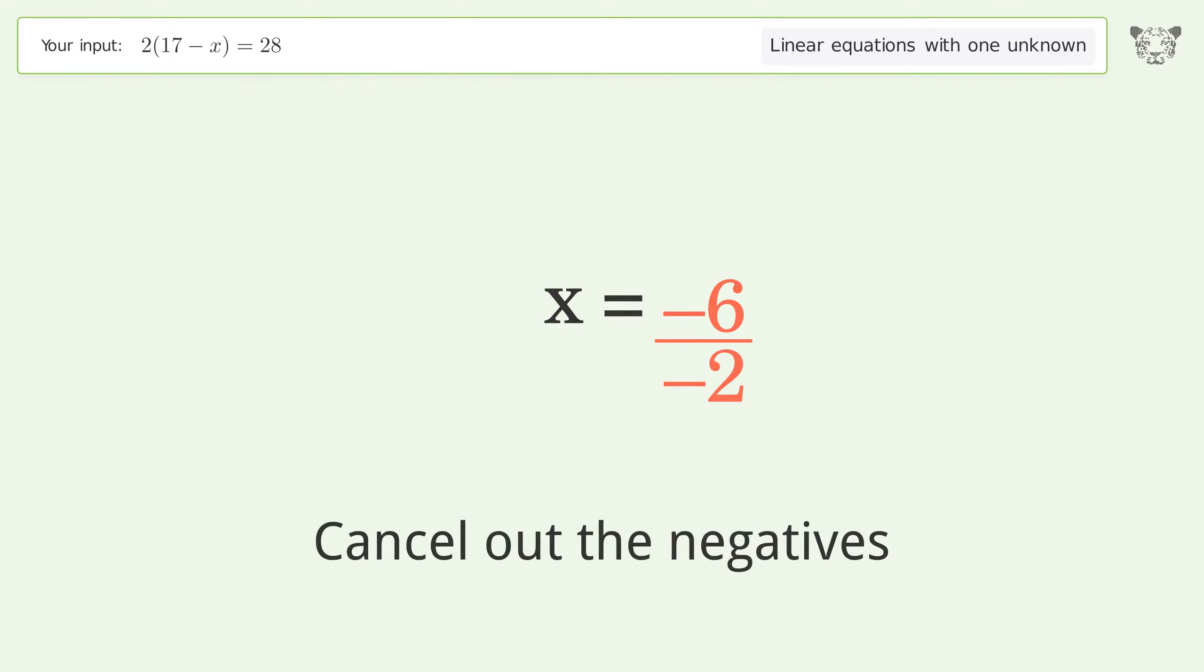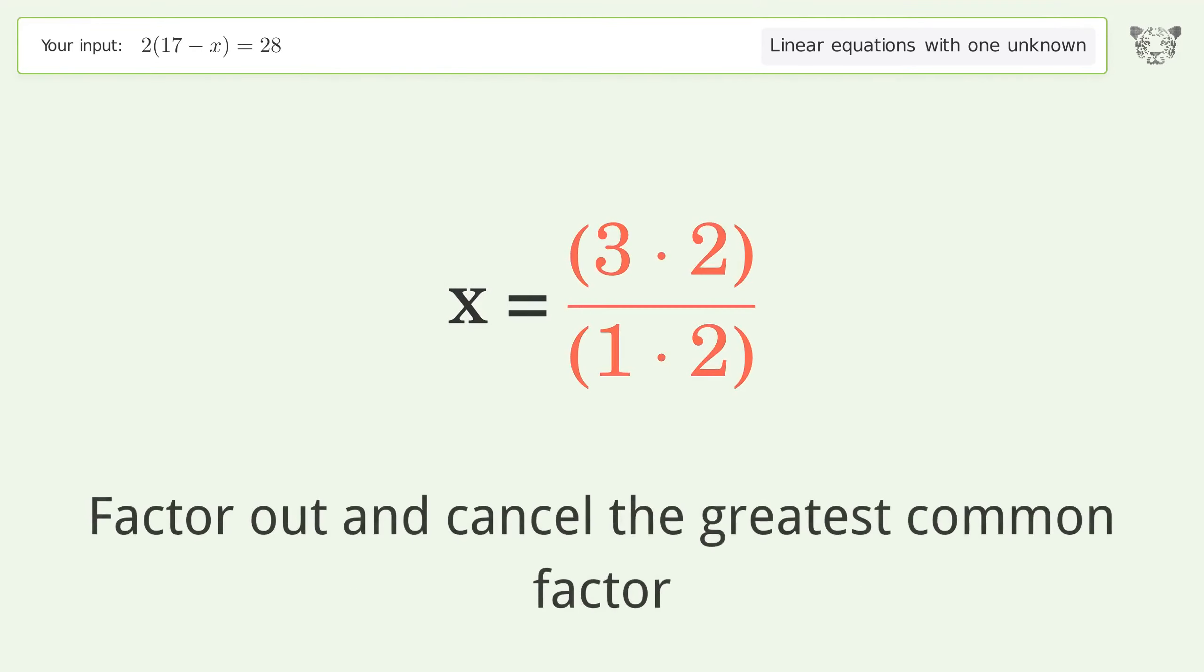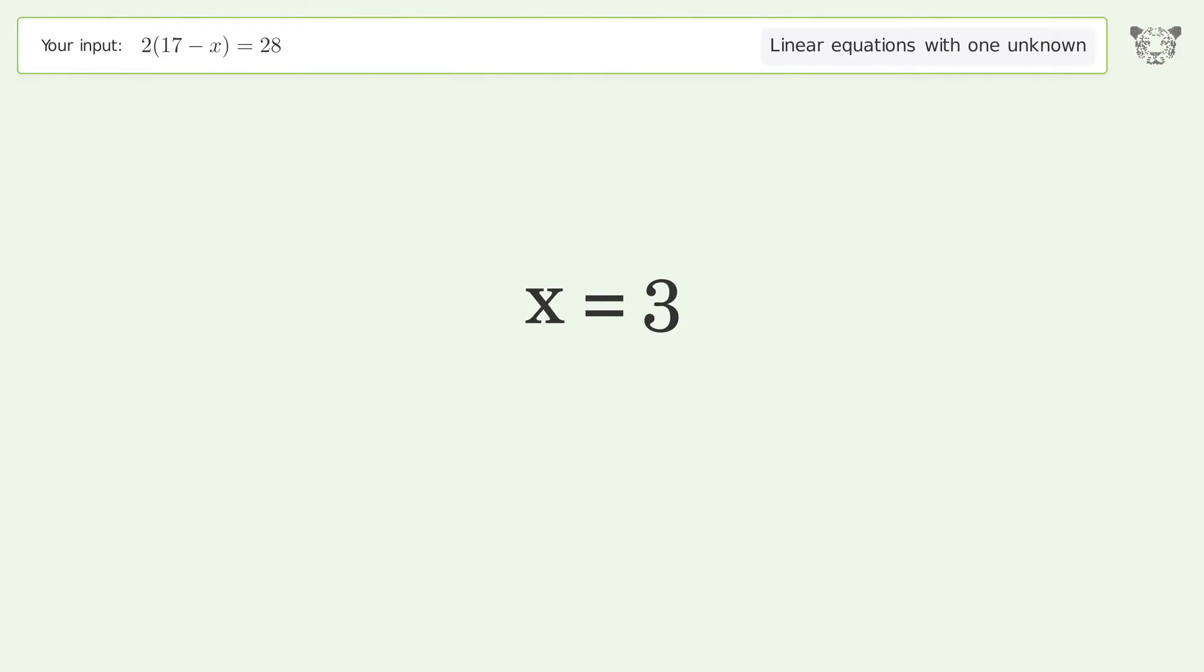Cancel out the negatives. Find the greatest common factor of the numerator and denominator. Factor out and cancel the greatest common factor. And so the final result is x equals 3.